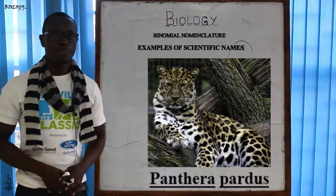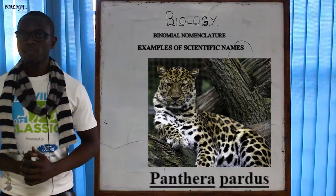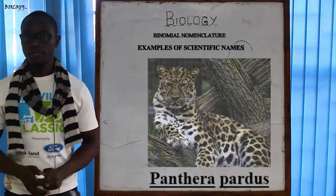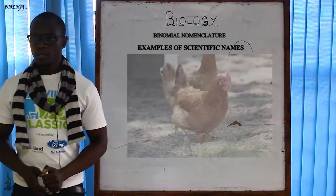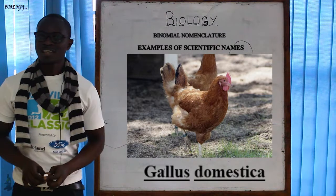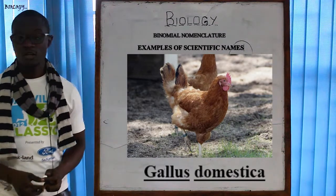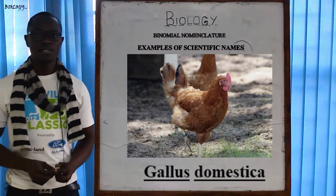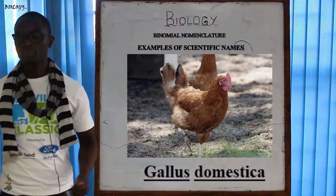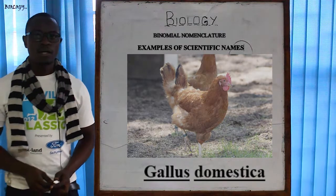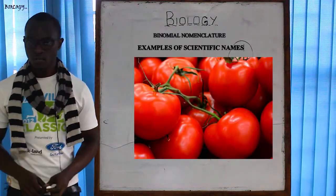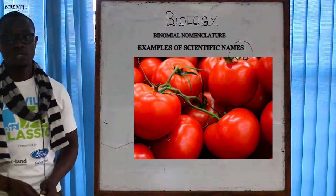Now let's look at domestic organisms we use at home, like poultry. The scientific name of the chicken is Gallus domestica — Gallus is the genus and domestica is the species name.